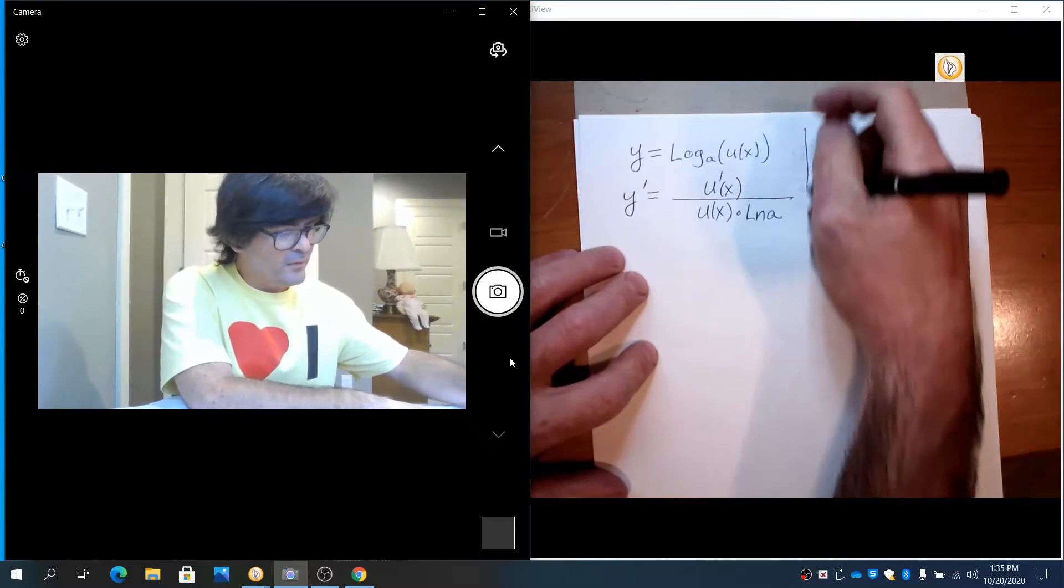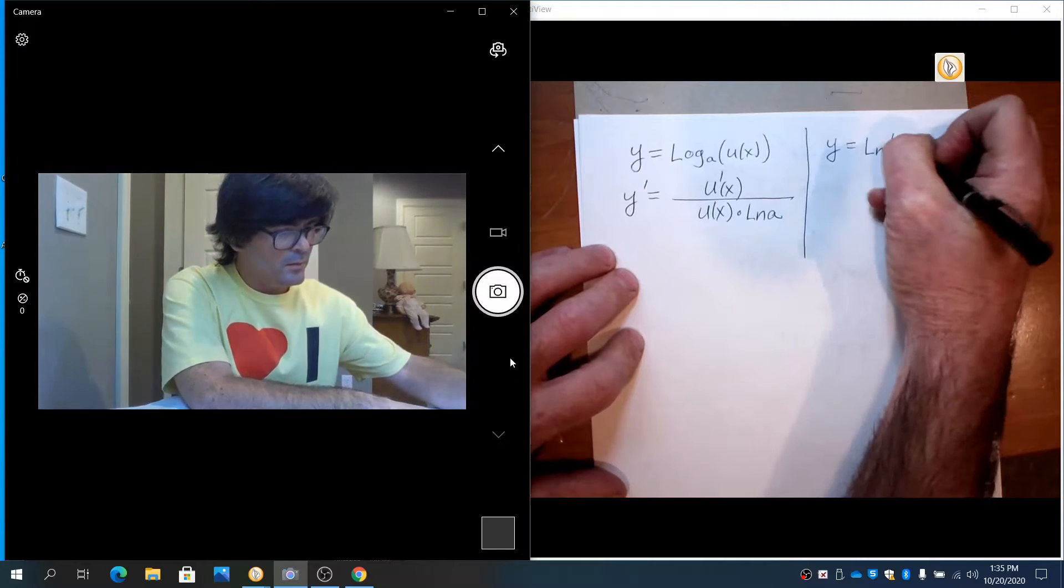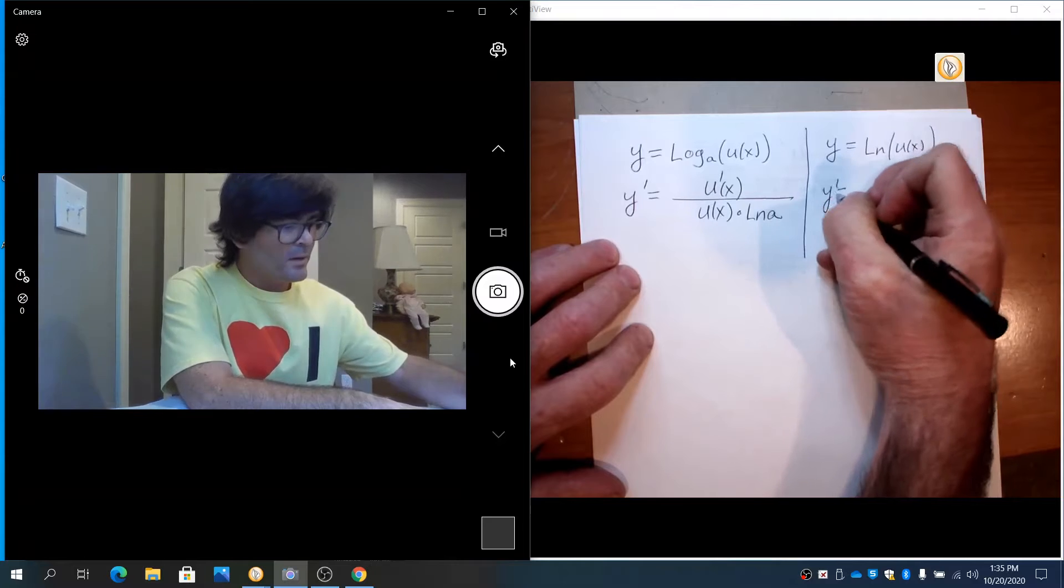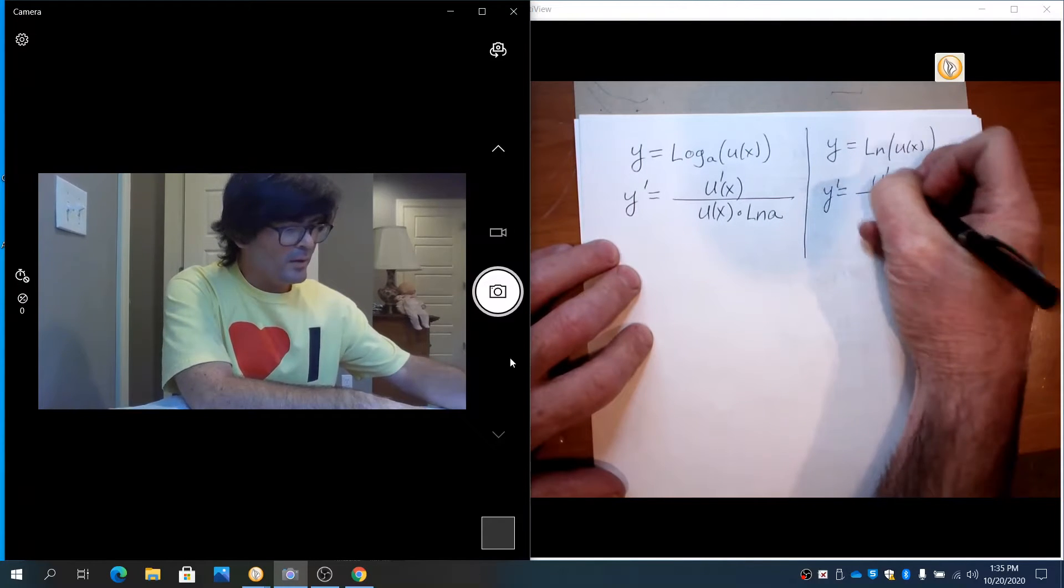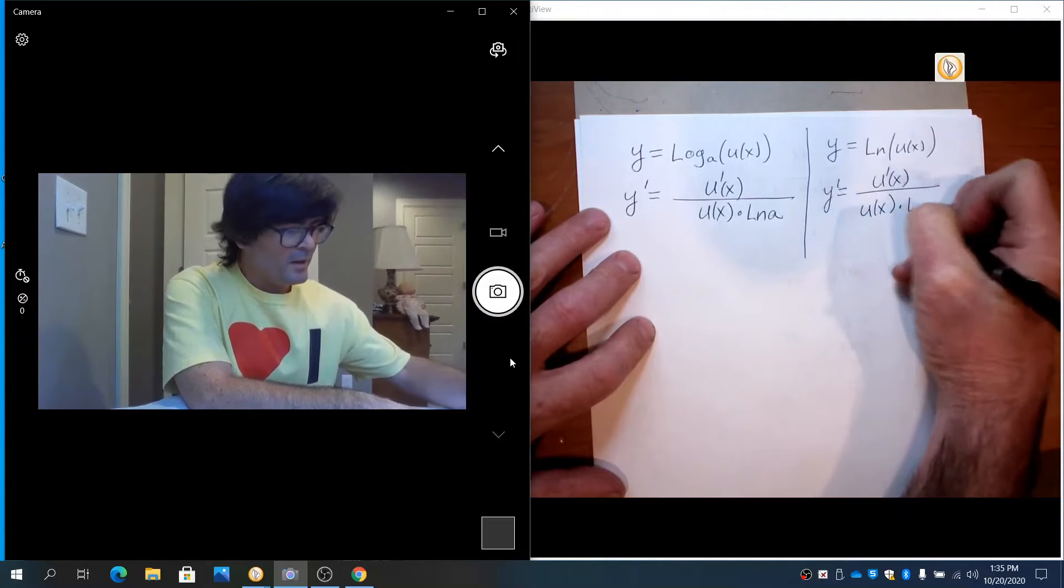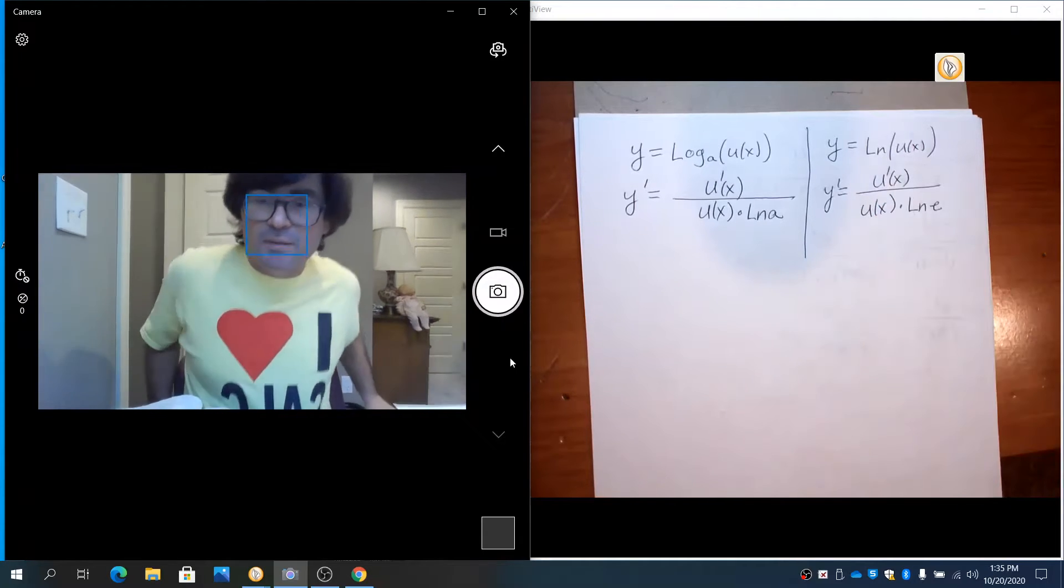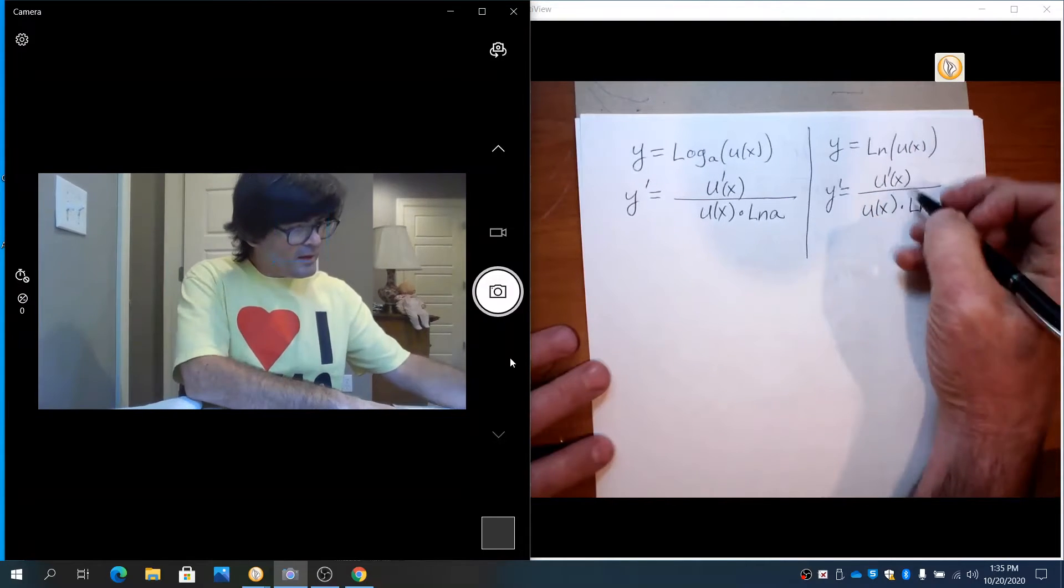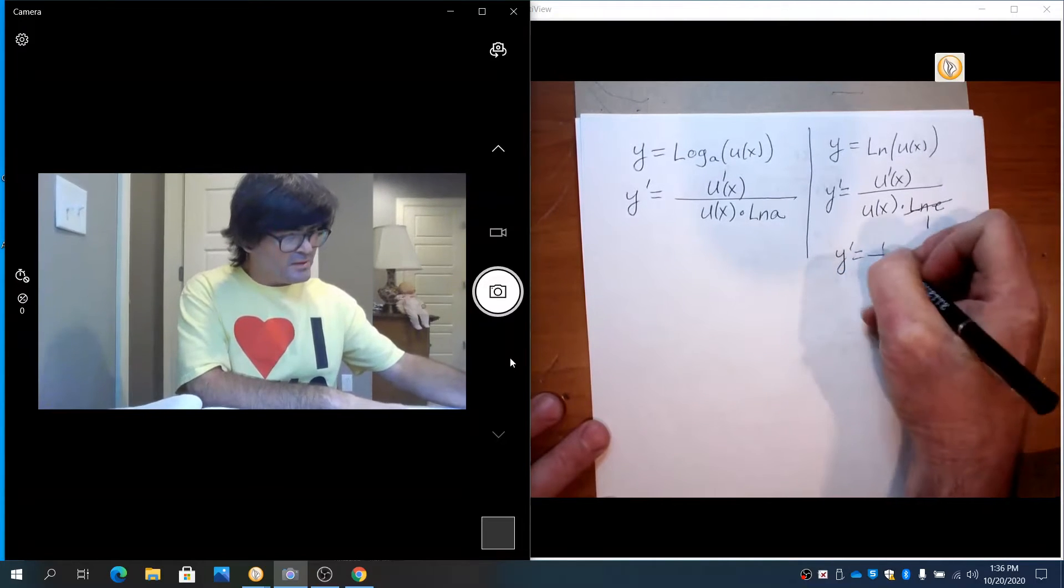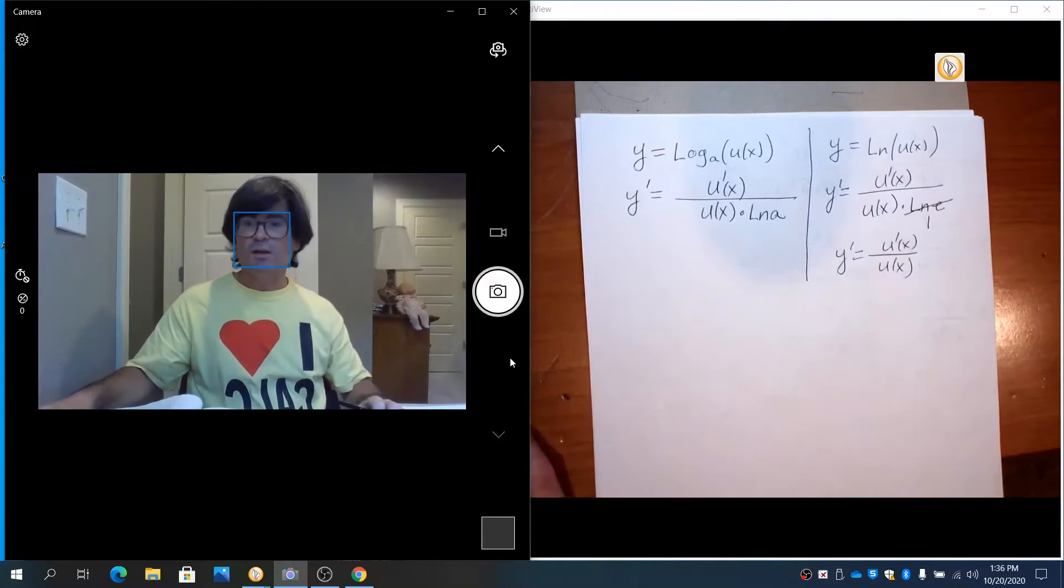If you are fortunate enough to have y equals natural log u(x), then you're going to use the same formula. You have u prime on top, u on bottom, and then natural log of the base. The base for natural log is e, so you have the natural log of the base on bottom, and that itself is 1. So for the natural log, even though the formula is the same, the derivative is just u prime over u.